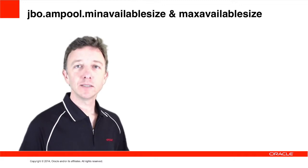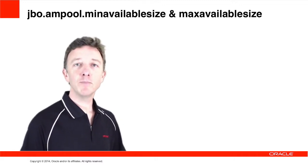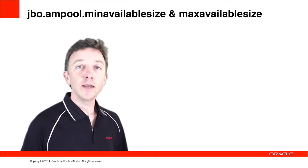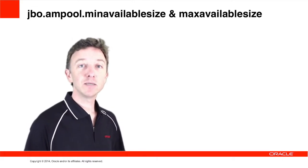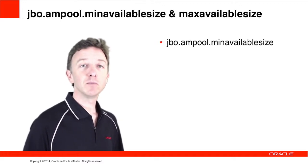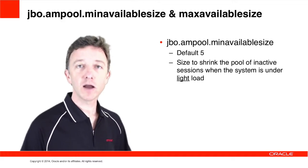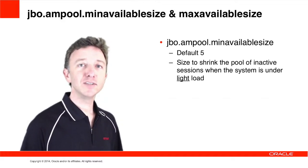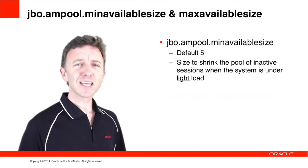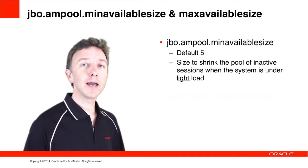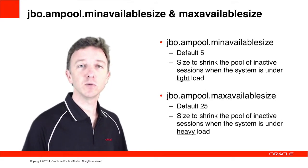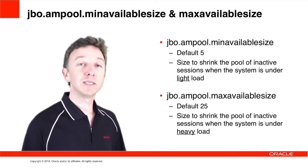This lets us explain how MinAvailableSize and MaxAvailableSize are used. If the system is under light load, then when the pool monitor comes along and discovers Application Modules to reclaim, it will reclaim all the idle Application Modules back to the MinAvailableSize — the default value of 5. Alternatively, if the system is under heavy load — remember, this is when we have more unavailable AMs above the Recycle Threshold — the pool monitor will reclaim any idle AMs back to an absolute count of 25, which is the default value for MaxAvailableSize.